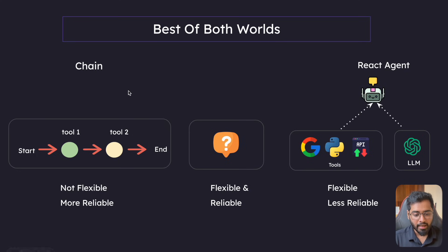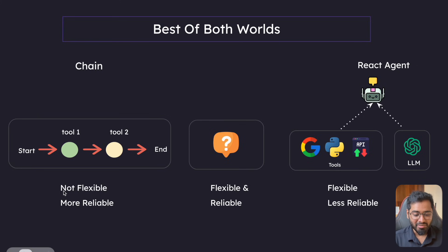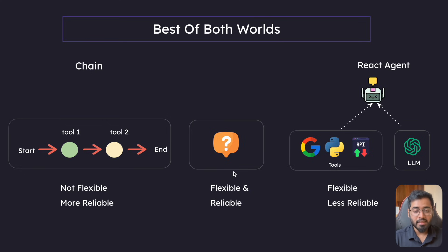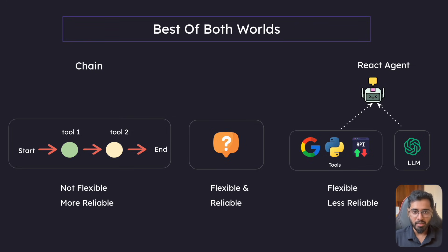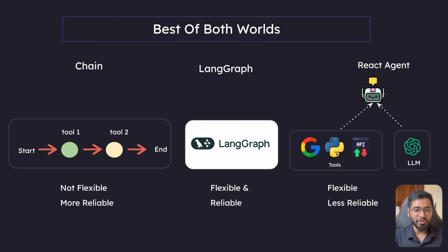On the other hand, we have chains. Chains are like a fixed assembly line - not really flexible, but more reliable. So we need something that has the best of both worlds. We need something that is going to be flexible but at the same time reliable. And that is exactly where LangGraph comes into the picture.